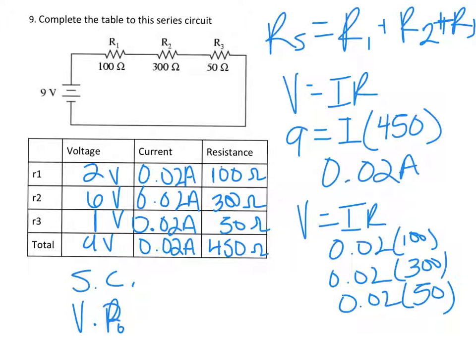Then we used Ohm's law formula V equals IR, plugged in our voltage that was given to us and the 450 ohms that we found, and that got us a current of 0.02 amps. So we plug that in here. And then we know since it's a series circuit...